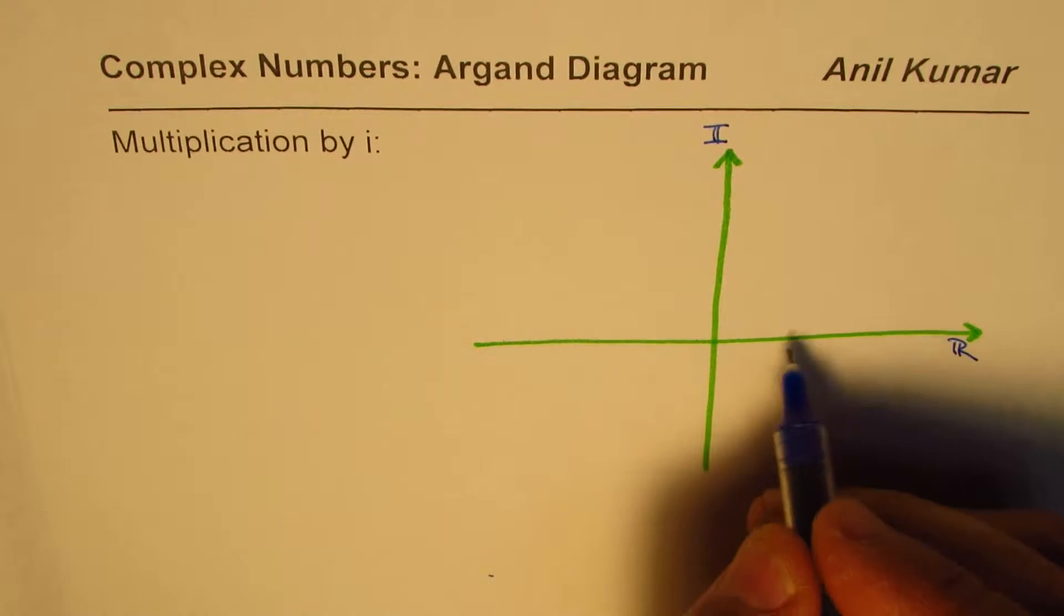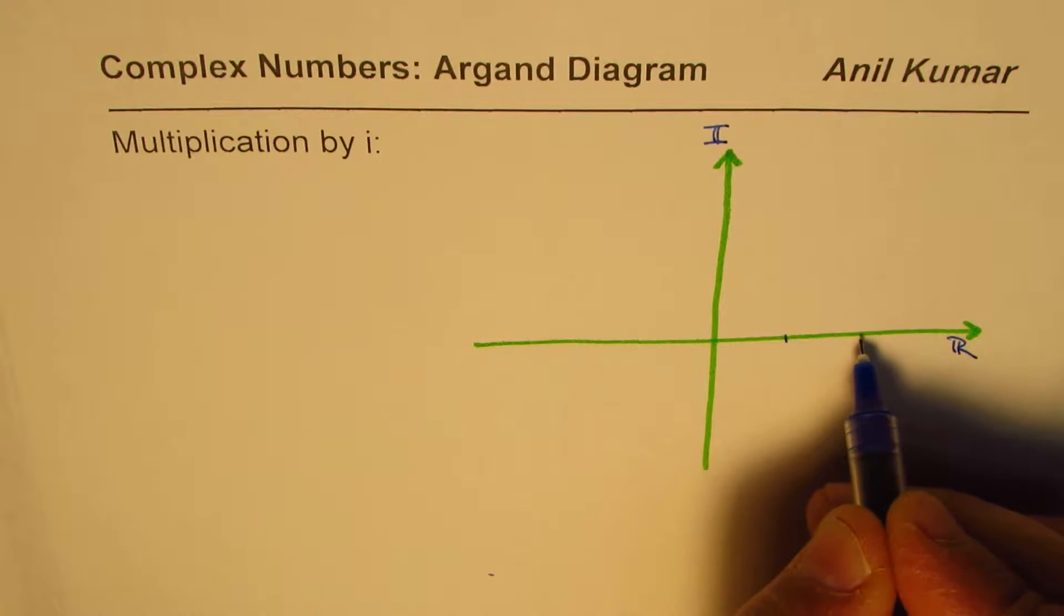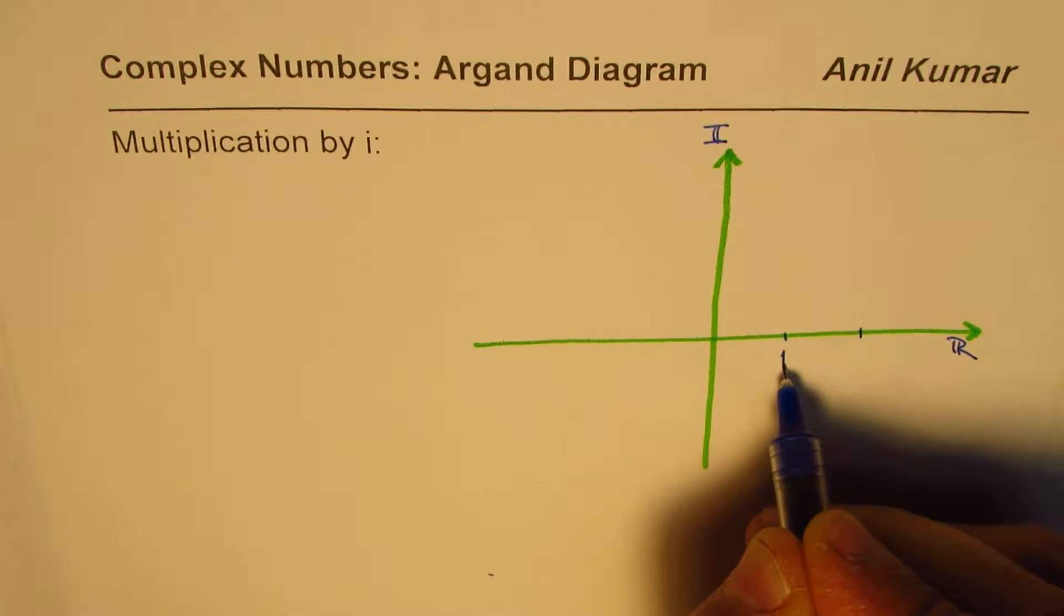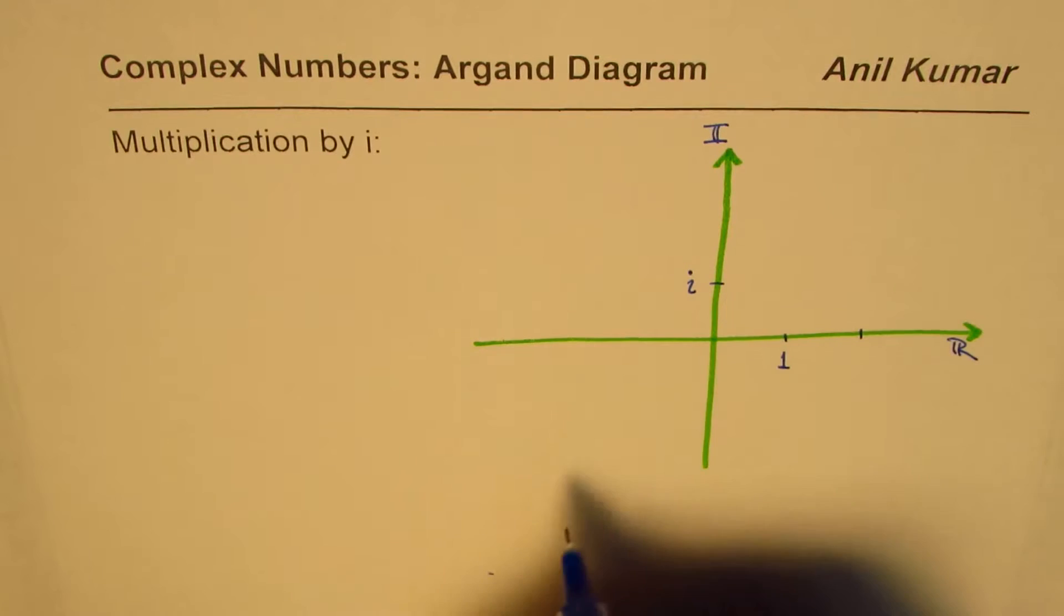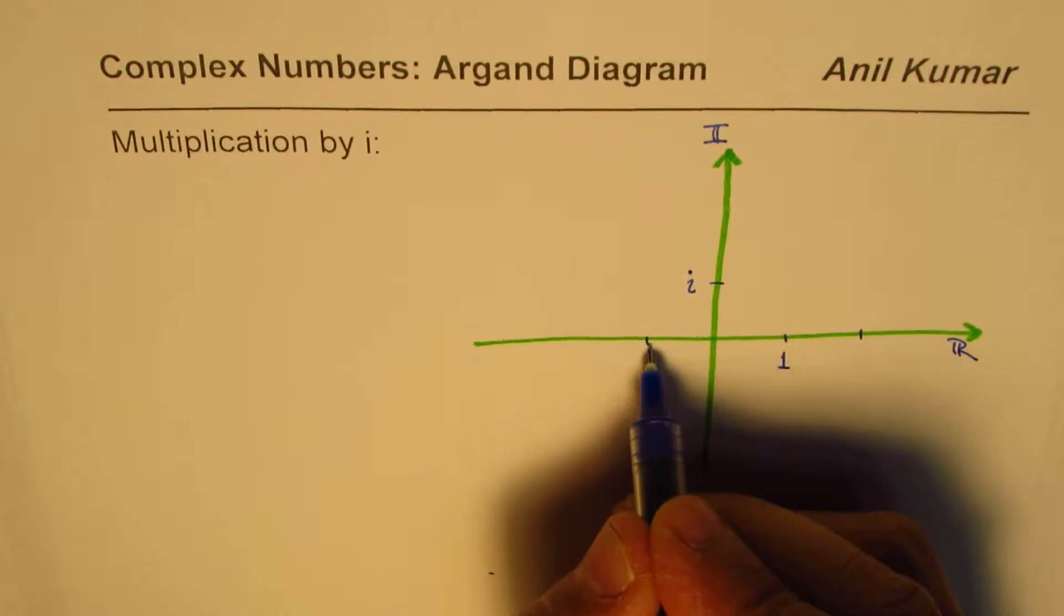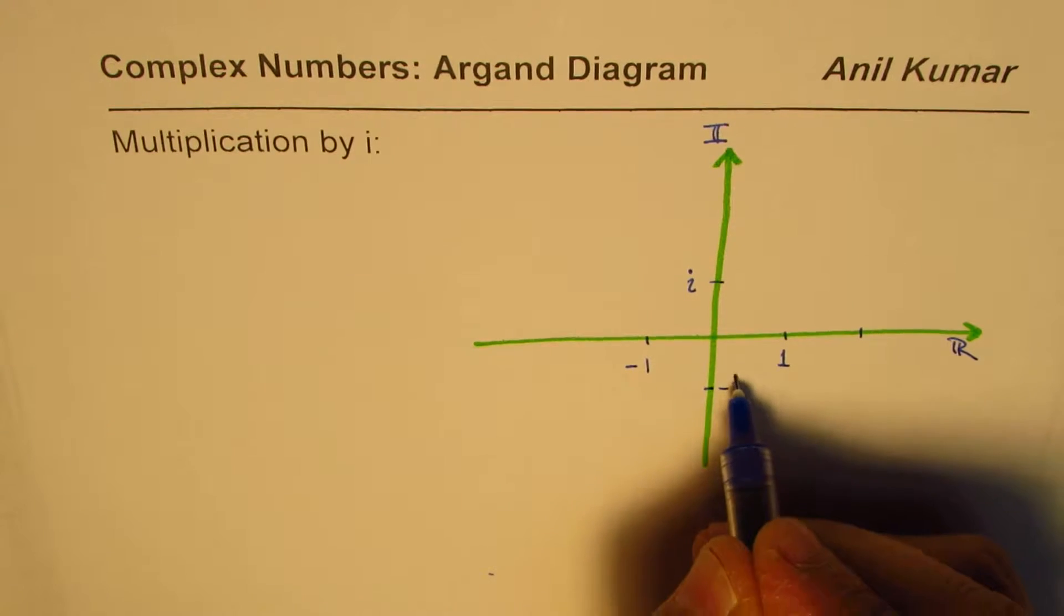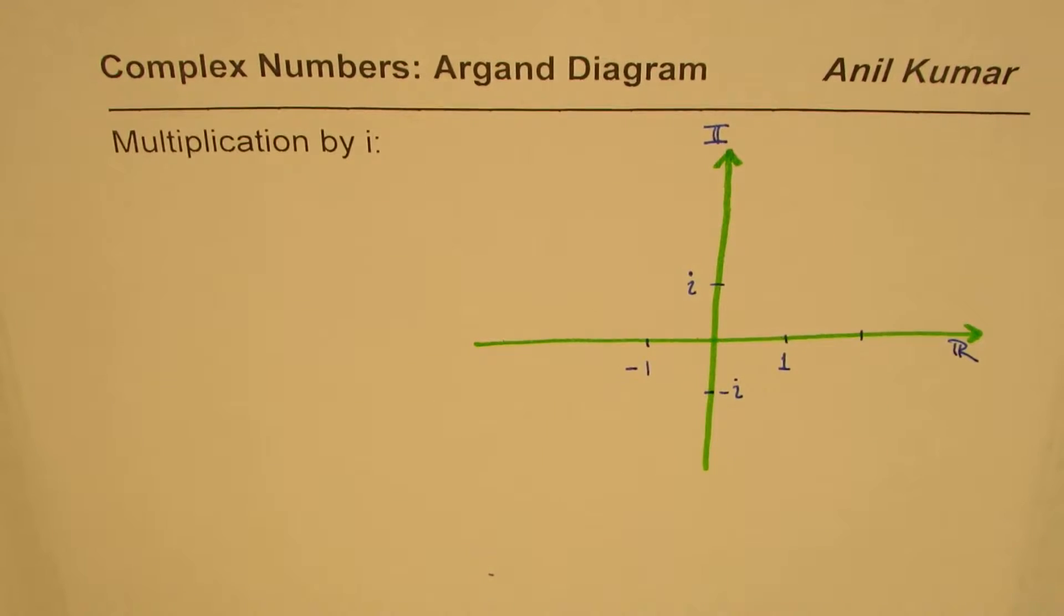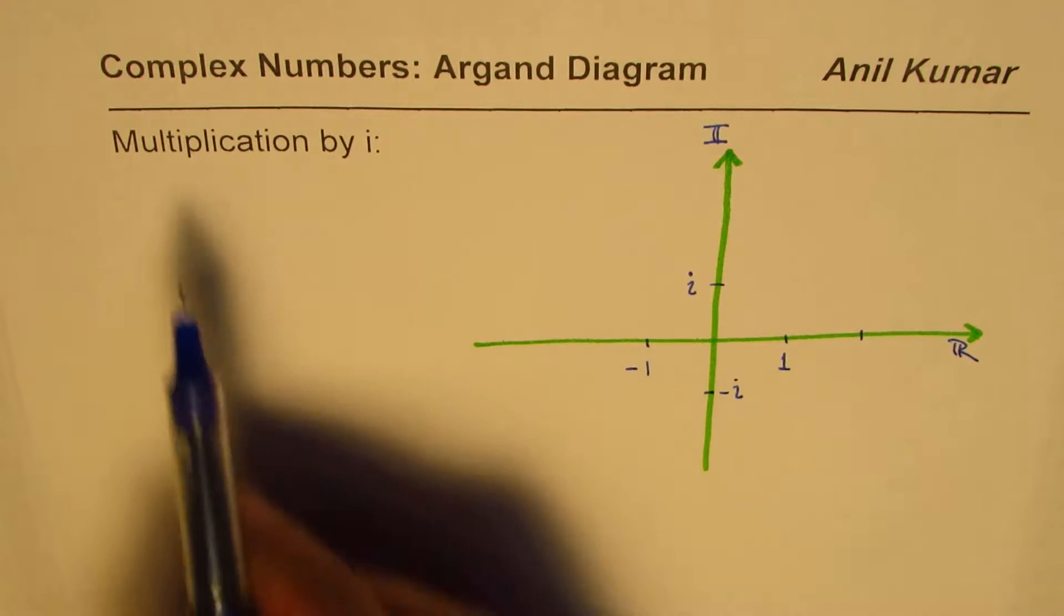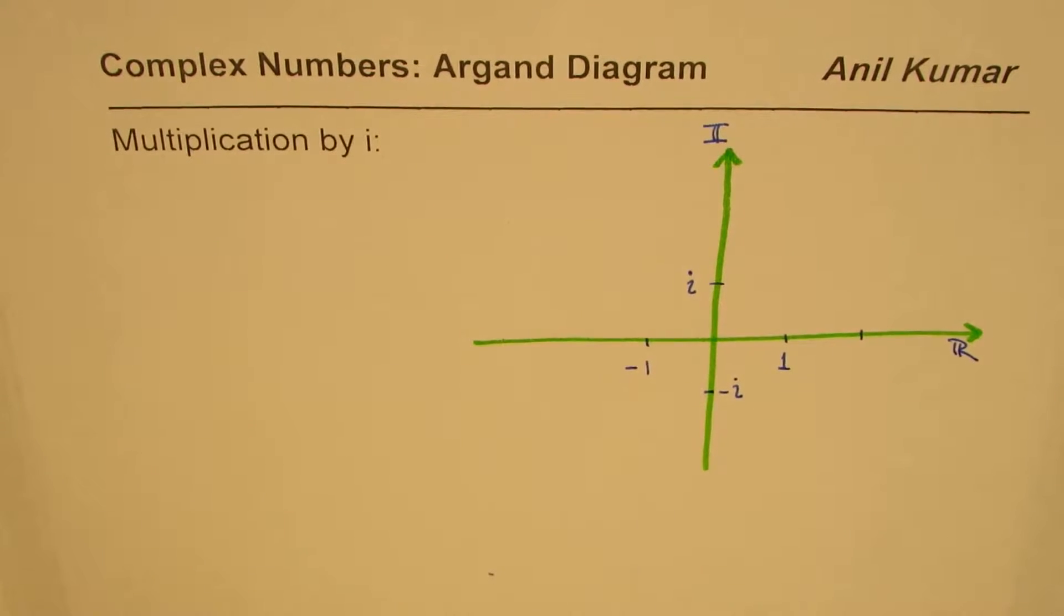Let us say this is one unit along the real part, so this is one and on the imaginary part, this will be represented by i and let's say this is minus one. Then here we'll have minus i. Now in this particular video, we are going to see the effect of multiplication by i.